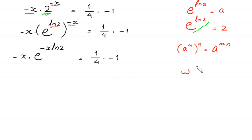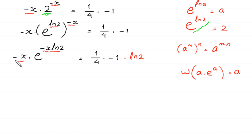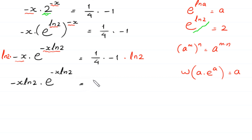Now to use the Lambert W function — W of a times e to the power a equals a — we must have the same expression in both positions. But here we have negative x times ln of 2, and there we have only negative x. So to make them match, we multiply both sides by ln of 2, giving us negative x times ln of 2 times e to the power negative x times ln of 2, equal to negative 1 over 4 times ln of 2. Now we have the same expression negative x times ln of 2 in both positions.